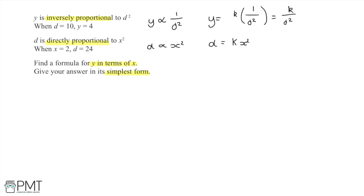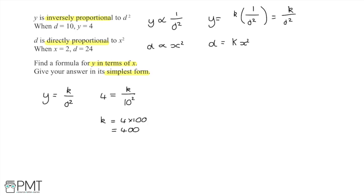Taking the first equation, y equals k over d squared, and substituting in the given values — when d is 10 and y is 4 — I get 4 equals k over 10 squared. Multiplying both sides by 100 gives k equals 4 times 100, so k equals 400. Therefore y equals 400 over d squared, where d is still unknown.